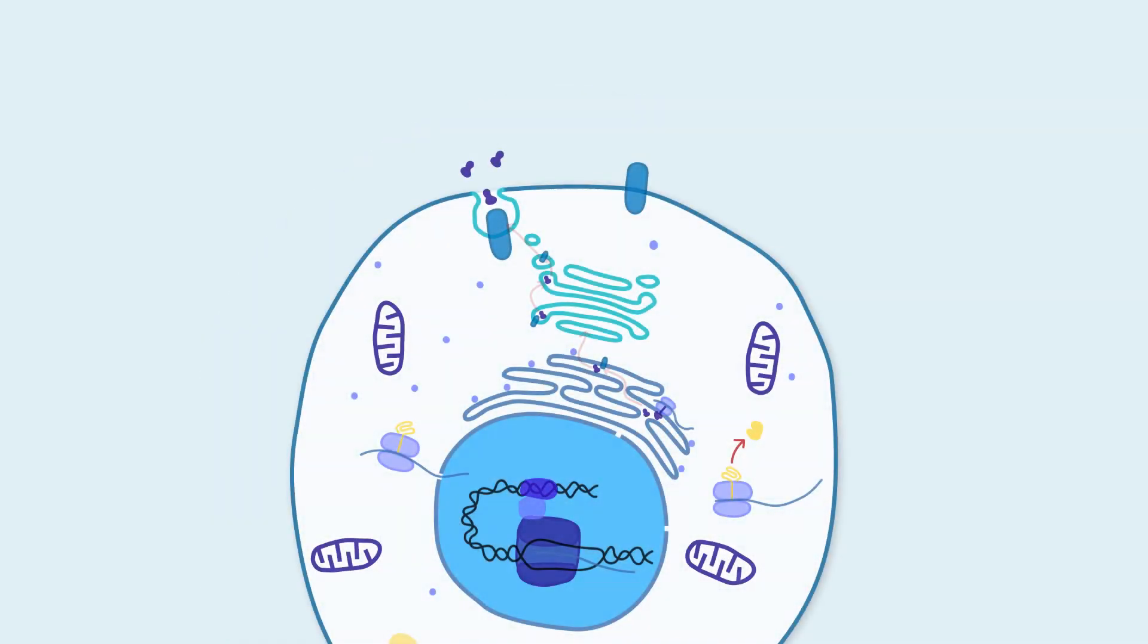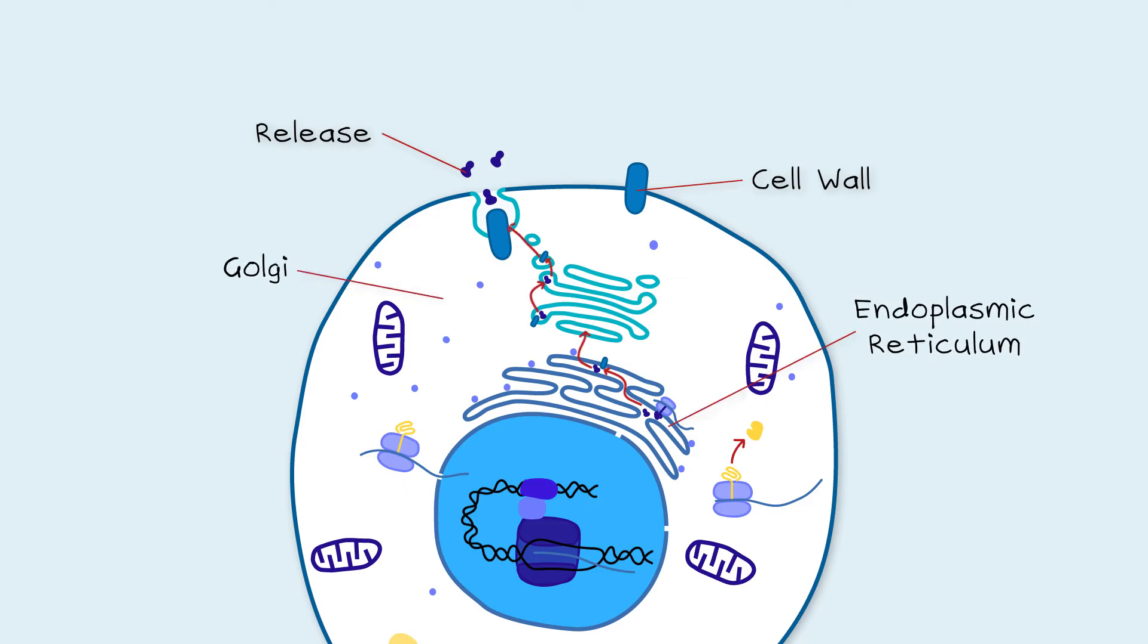Where the protein ends up depends on a short sequence of instructions at the start of the mRNA, which tells it to go to either the cytoplasm, the cell wall or be released from the cell. If it's destined for the cell wall or release, it must travel through the endoplasmic reticulum and Golgi.